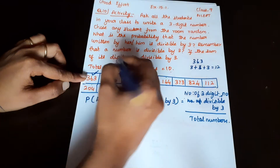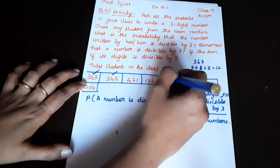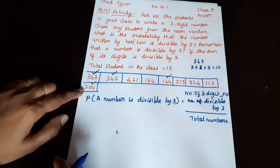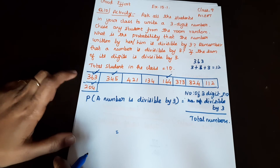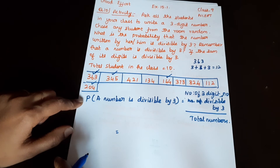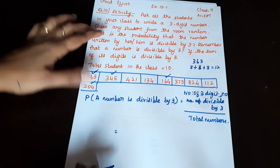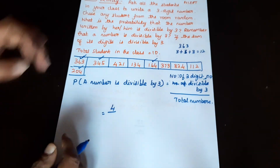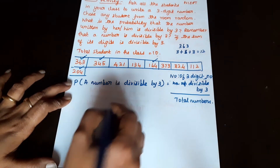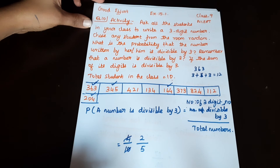We check which numbers are divisible by 3. The probability is equal to the number of 3-digit numbers divisible by 3 divided by the total numbers. The number of 3-digit numbers divisible by 3 is 4. So the probability is 4 out of 10 total students.